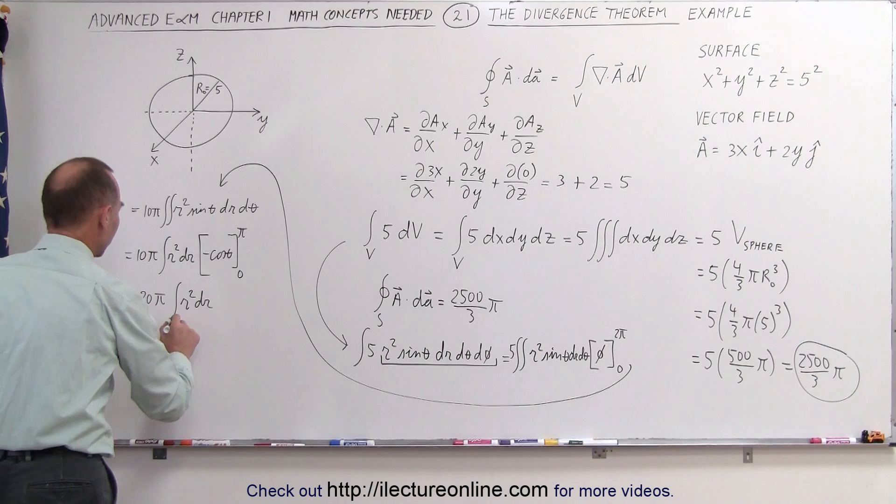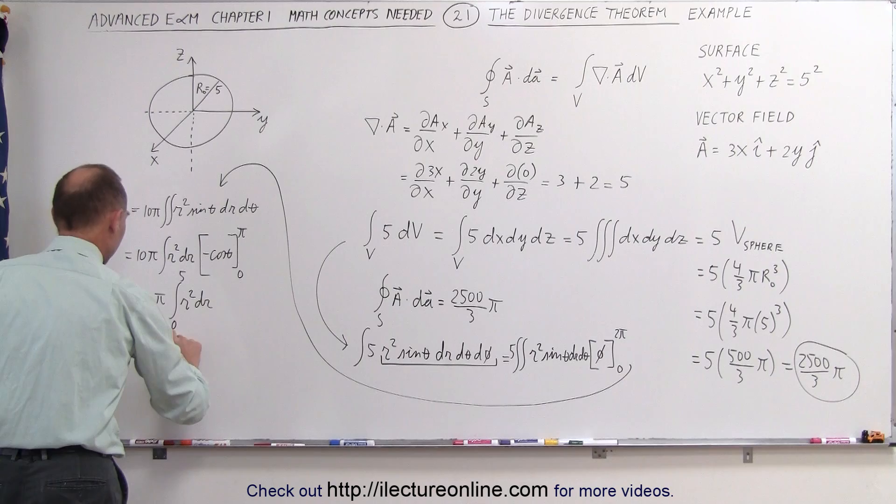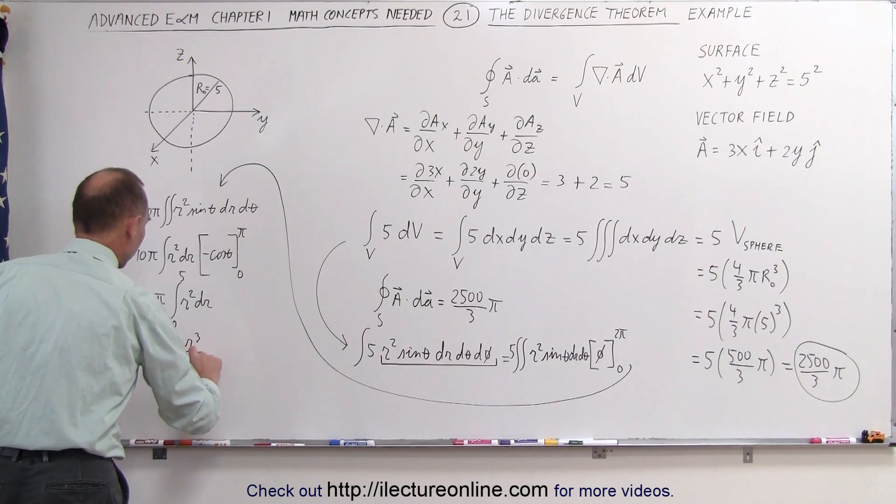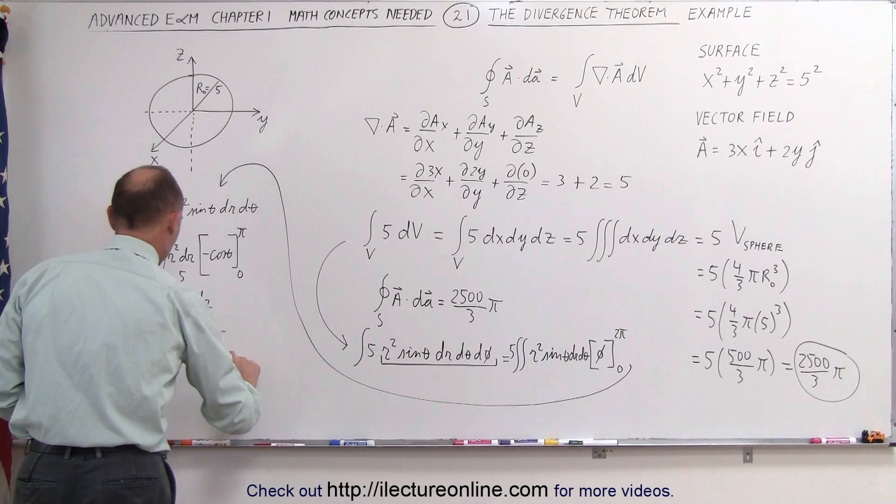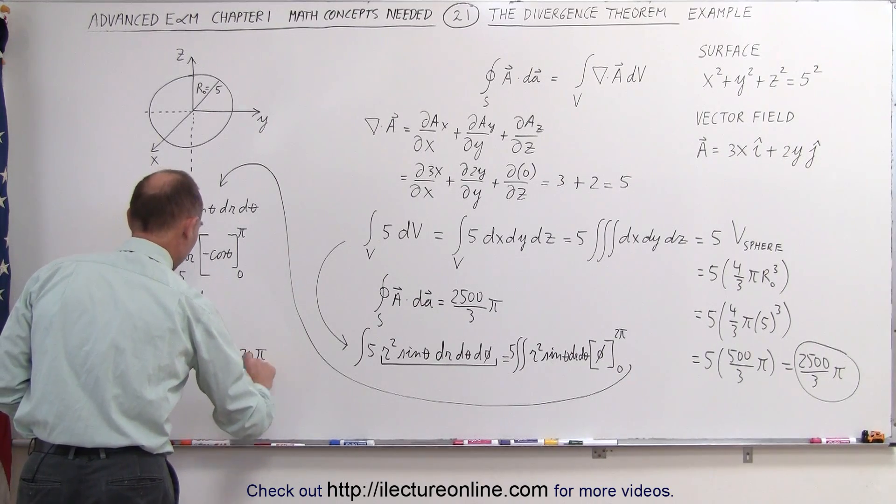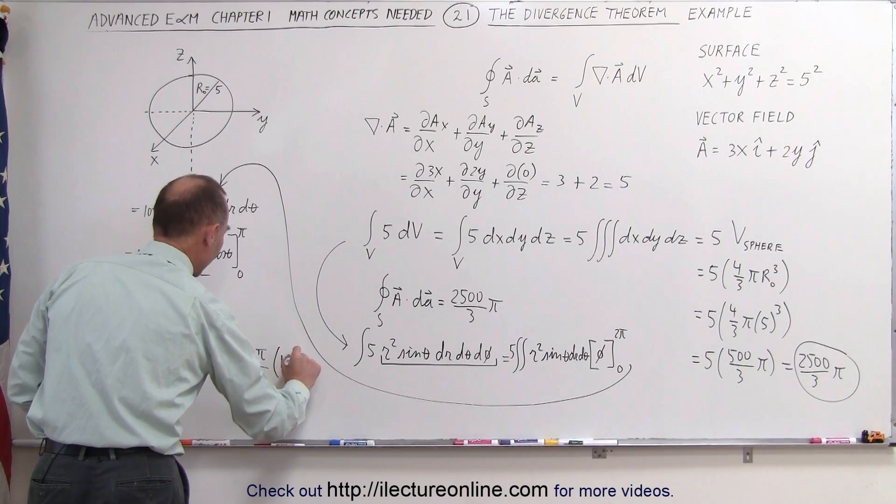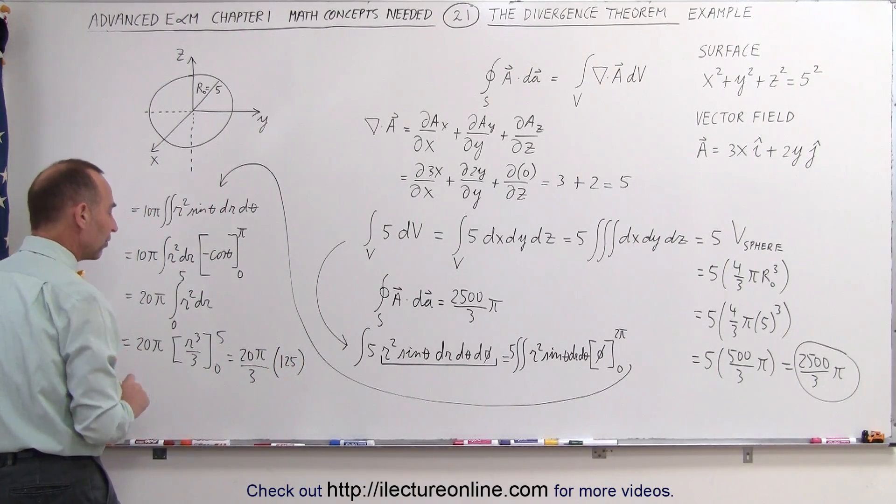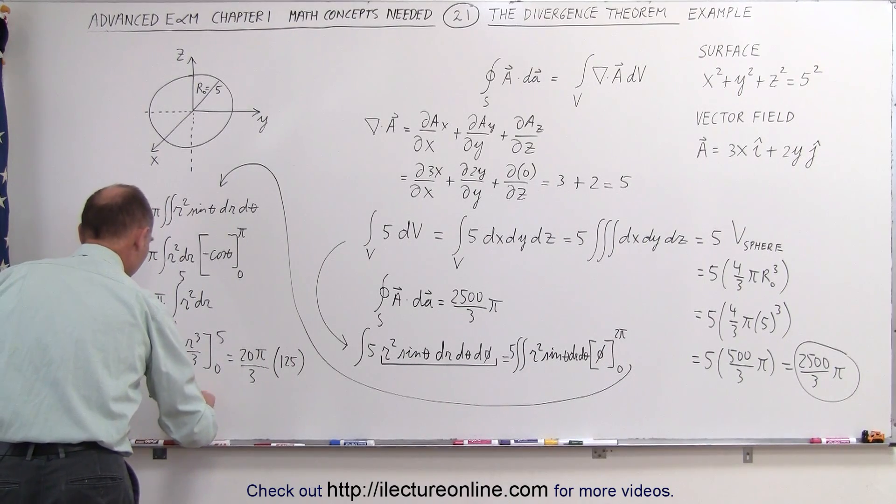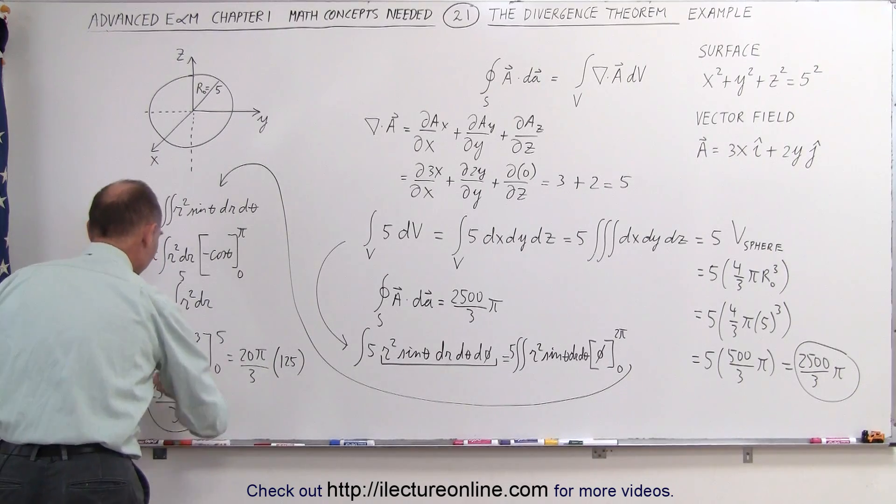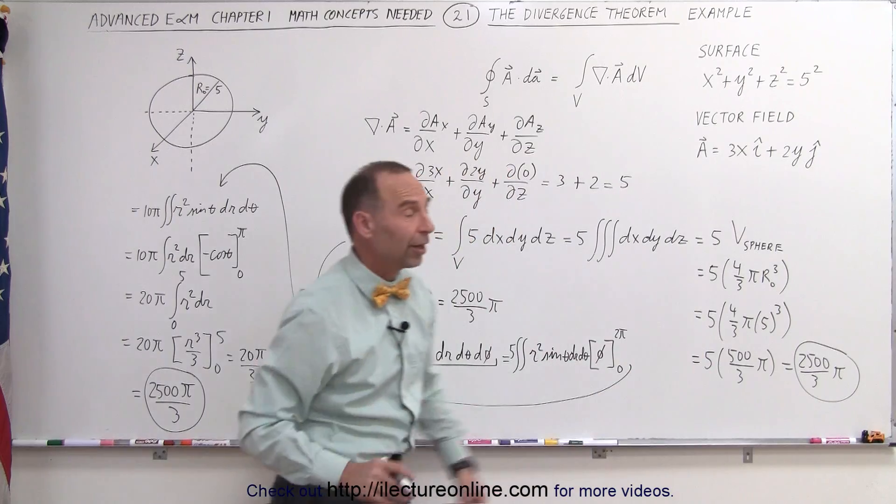Finally, we can integrate this from 0 to 5, and this becomes 20 pi times r cubed over 3. From 0 to 5, plug in the upper limit, we get 20 pi divided by 3 times 5 cubed, which is 125, and 20 times 125 is 2,500, so this becomes 2,500 pi divided by 3, which again gives us the same answer as we got over here when we assumed we knew the volume of the sphere.